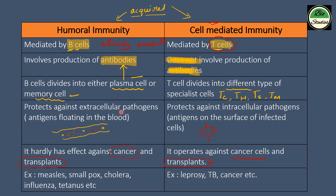Humoral immunity acts against extracellular pathogens such as smallpox, measles, and tetanus. Cell-mediated immunity acts in diseases like tuberculosis, leprosy, and cancer. So in these diseases, cell-mediated immunity plays the key role.